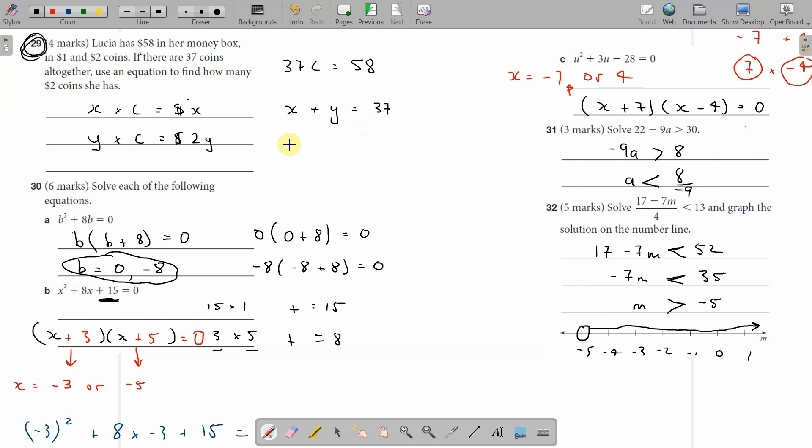Then, if we add up X and 2Y, we get the dollars. X is the number of $1 coins, Y is the number of $2 coins. X + Y = 37 for the total coins. In money terms, X + 2Y = 58 dollars. So we have two equations: one for the number of coins and one for the dollars.